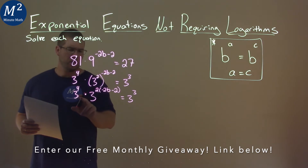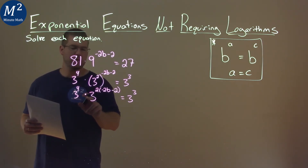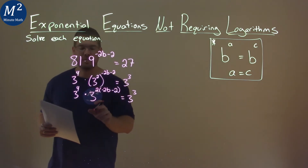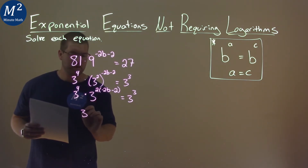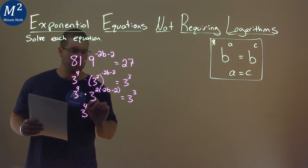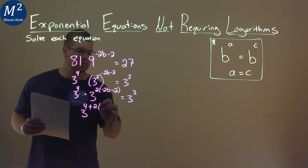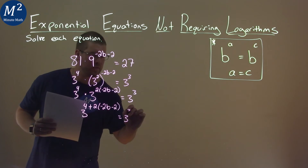Alright, we now have the same base of 3 and it's being multiplied. Our rules state we add the exponents if we want to keep that same base of 3. So 3 is now to the power of 4 plus 2 times negative 2b minus 2, and that equals 3 to the 3rd power.